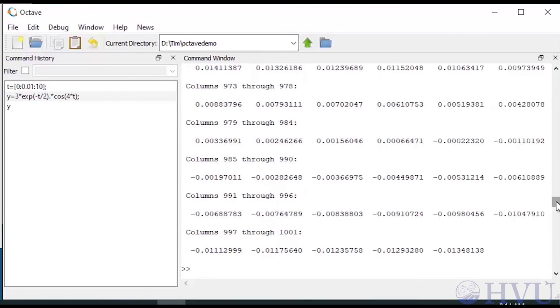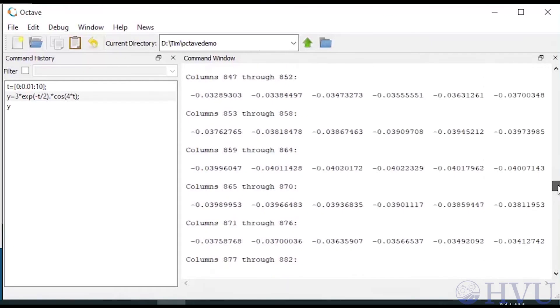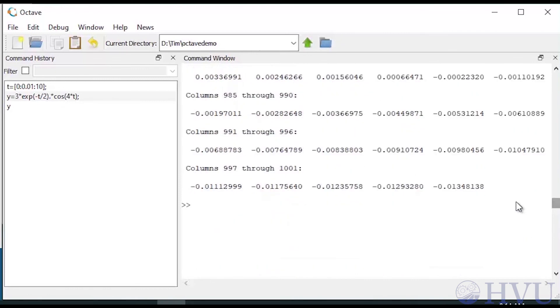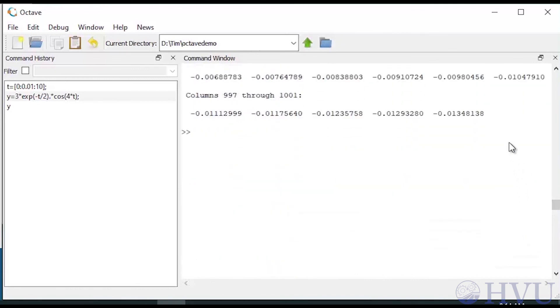This isn't terribly informative though, there's really too much information here to be useful. If I'm interested in something specific, like the minimum or maximum value of the function, for example, I can use Octave's min and max functions to return these values.